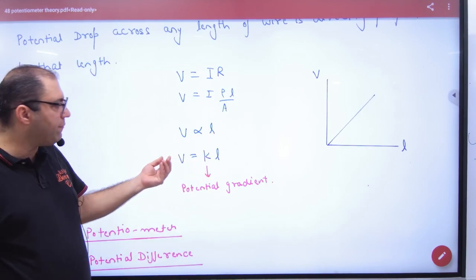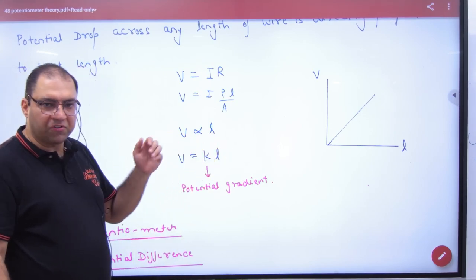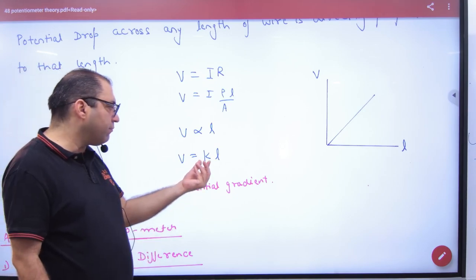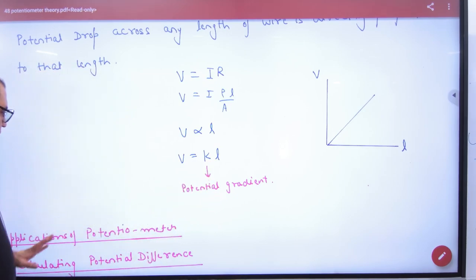Which we have already discussed. So V is proportional to L, or V equals some constant K times L, where K is a potential gradient. This is the principle of Potentiometer.